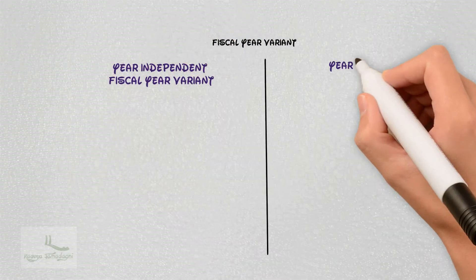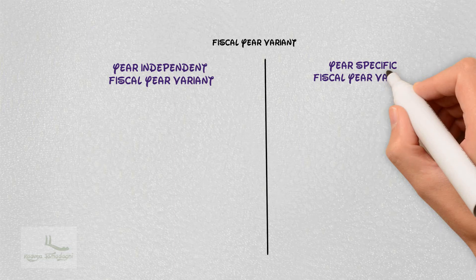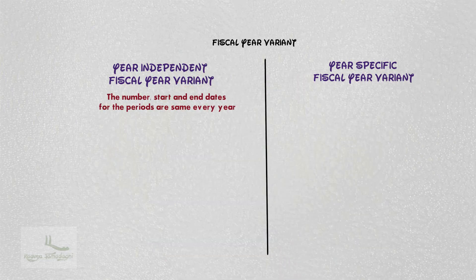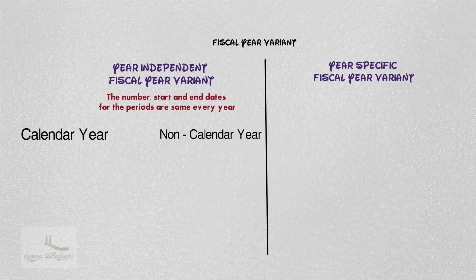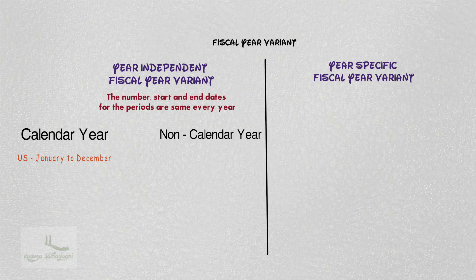In fiscal year variant we have got two types: first is year-independent fiscal year variant and the second is year-specific fiscal year variant. In the case of year-independent fiscal year, the number and also the start and end dates for the periods are the same every year. Under this we have got two more types: calendar year and non-calendar year. Calendar year means the numbers and the start dates and end dates are the same and follow the calendar year, that means January to December. For example, if I take the US, it is January to December.